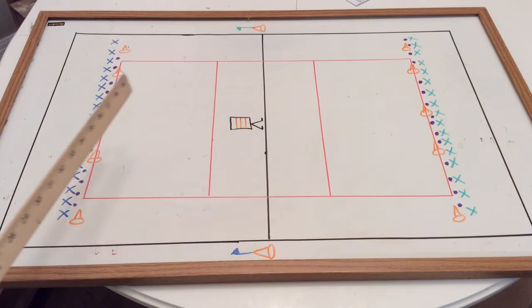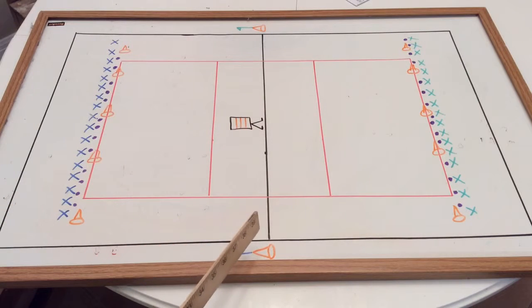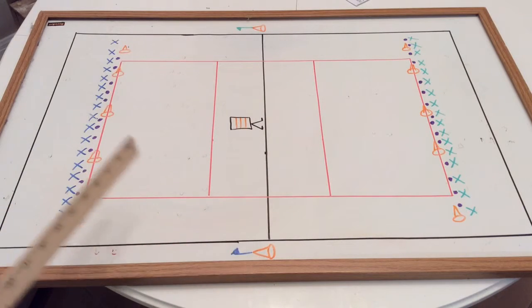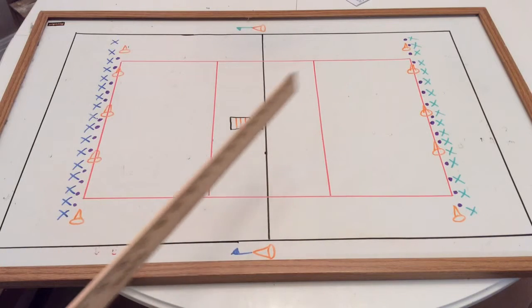A team gets a point every time the bee walks all the way to their cone. Let's say blue - if the bee walks all the way to the blue cone, that's a point for the blue team. If the bee walks all the way to the green cone, it's a point for the green team.